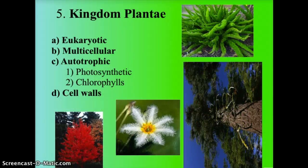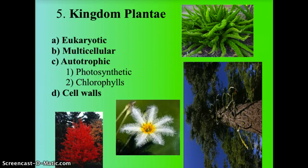The plant kingdom — Plantae — is eukaryotic and multicellular. Plants are autotrophic and photosynthetic, depending on pigments called chlorophylls to absorb sunlight and convert it into energy. They also have cell walls.